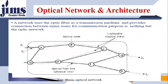First of all, we focus on a basic Optical Network. When you establish an Optical Network, we use an Optical Fiber Link to connect — this is a physical link — to connect different Optical Nodes. A network uses Optical Fiber as a transmission medium and provides connection between many users for communication purposes. That's the Optical Network.